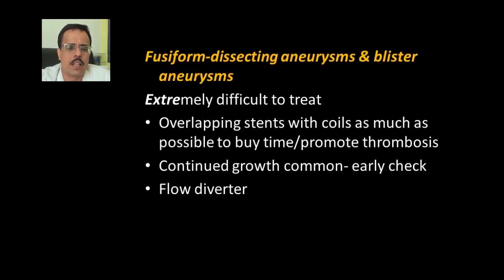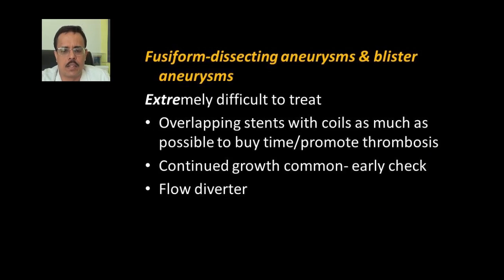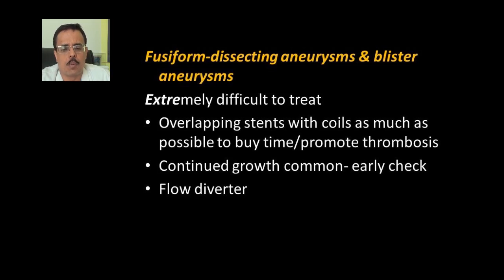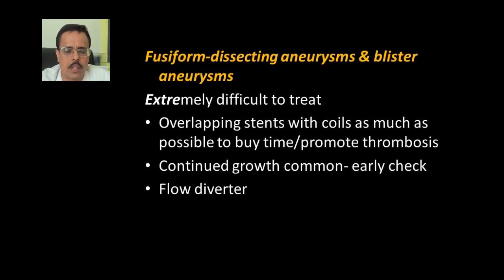In fusiform dissecting aneurysms, which can be difficult to treat, one can place overlapping stents with coils as much as possible to buy time and to promote thrombosis. Continued growth is a possibility, so an early check angiogram should be done. In recent times, for aneurysms in the internal carotid artery, we have practically switched to flow diverter stent placement.